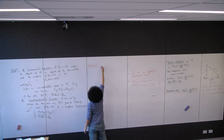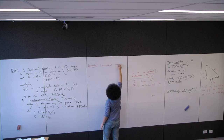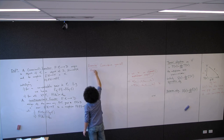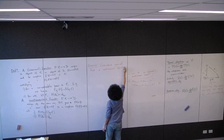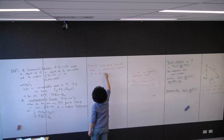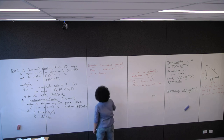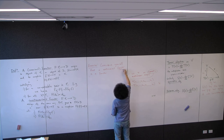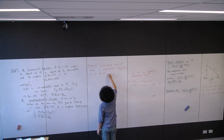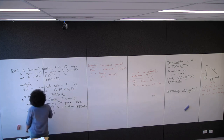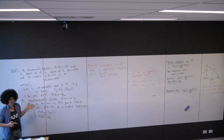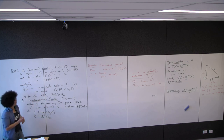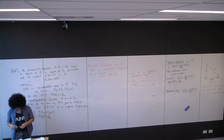Exercise: convince yourself that a contravariant functor F from C to D is the same as a covariant functor from C^{op} to D. That's why I put 'covariant' in brackets — I won't really talk about contravariant functors. I'll just write the functor as being from C^{op} into wherever, rather than writing a contravariant functor from C into D.